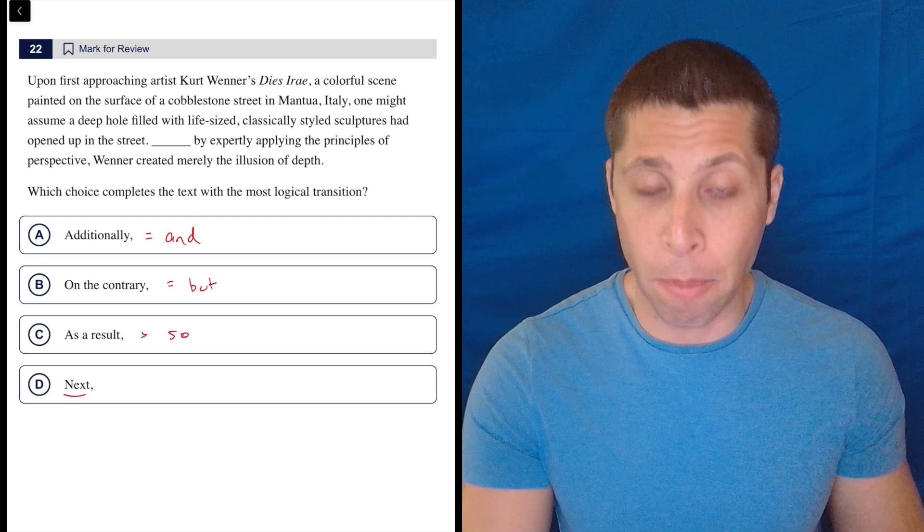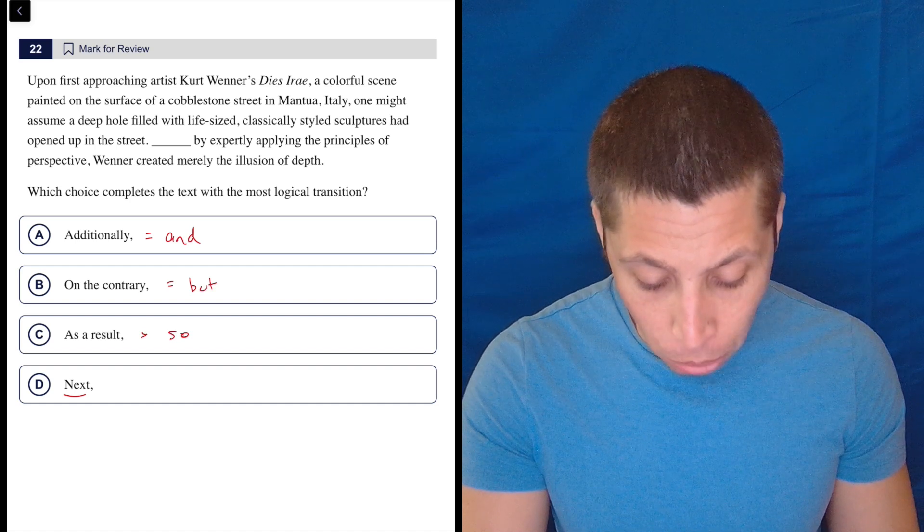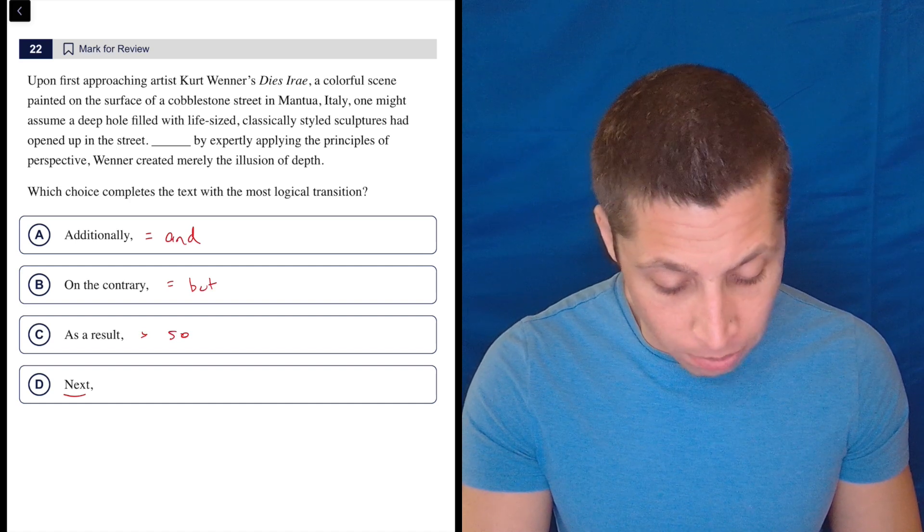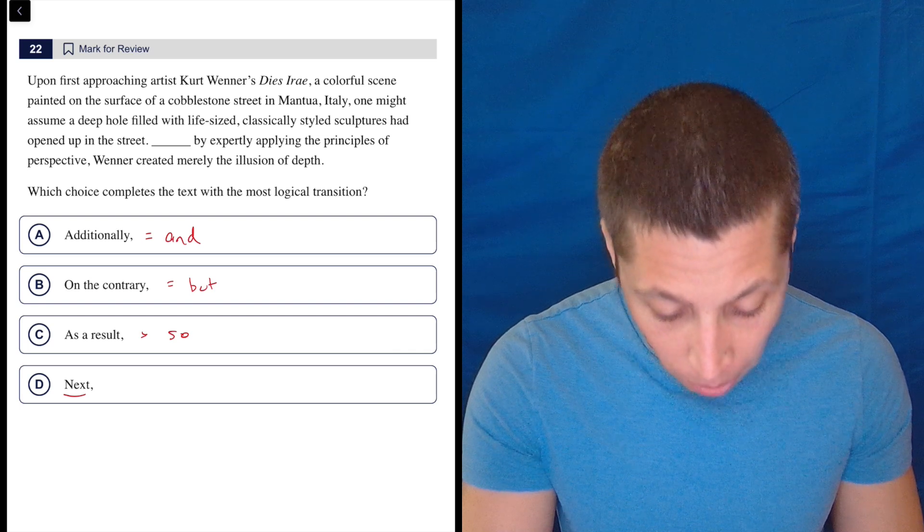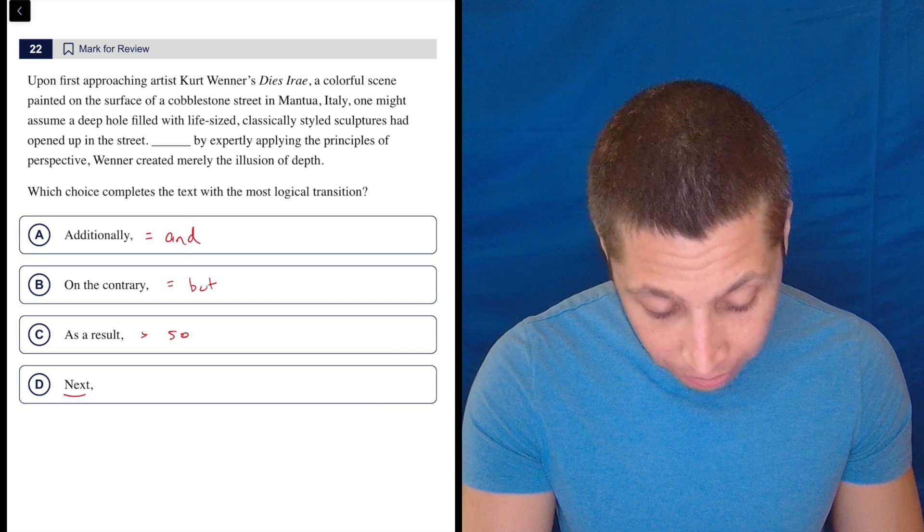So these are easy ones to understand, but let's see how the passage goes. Upon first approaching artist Kurt Wenner's Dies Irae, a colorful scene painted on the surface of a cobblestone street in Mantua, Italy...